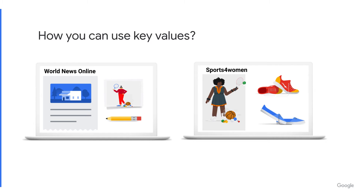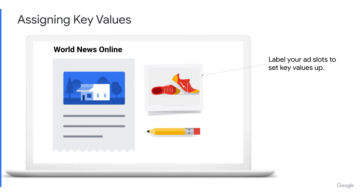Key values can act as directions on a map of where your ads should go by identifying the ad slot they represent. As a first step, you can label the ad slot on the sports page by assigning a key value called key equals page and value equals sports. You can also use dynamic key values to target ads based on a user's search term on your site. With dynamic targeting, you can have thousands of possible targeting values without defining each one ahead of time. We'll explain the setup further of dynamic and predefined key values in the setting up key values video.